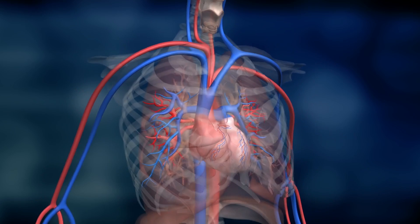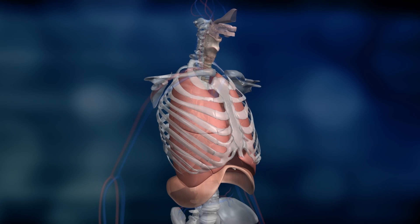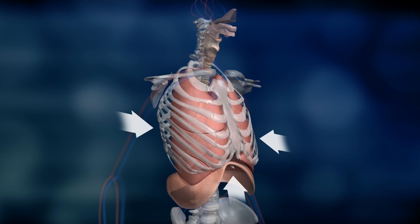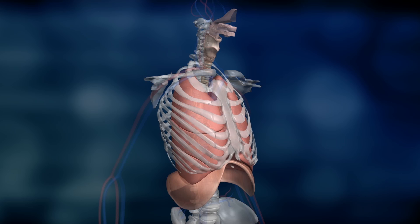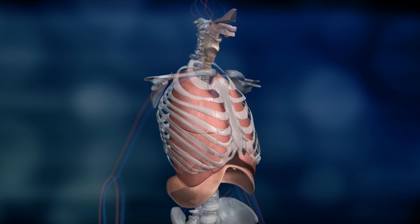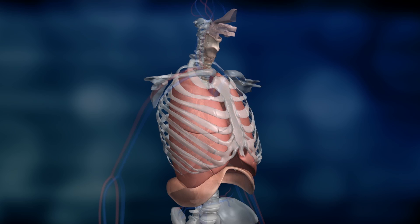When exhaling, the diaphragm and ribcage muscles relax again. This, in turn, reduces the size of the chest cavity. The carbon dioxide rich air is forced out of the lungs and back into the ambient air through the mouth and nose.